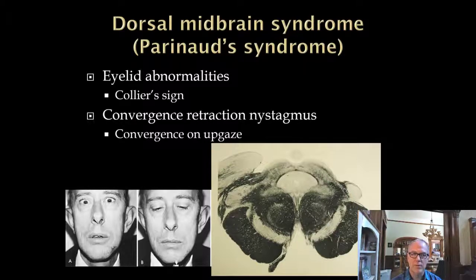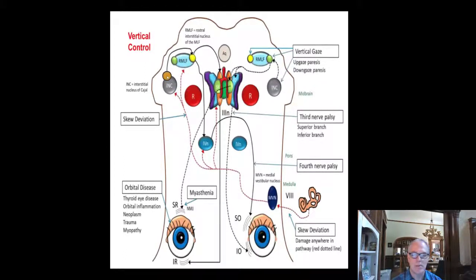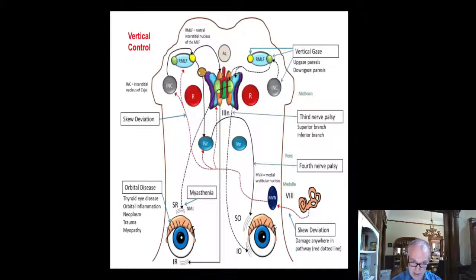Regarding vertical eye movements: while we spent a lot of time on horizontal eye movements, there is anatomy in the midbrain for vertical eye movements. The interstitial nucleus of Cajal and the rostral interstitial MLF innervate appropriate third nerve nuclei for vertical eye movements. The key takeaway is that the pons controls horizontal eye movements and the midbrain controls vertical eye movements.